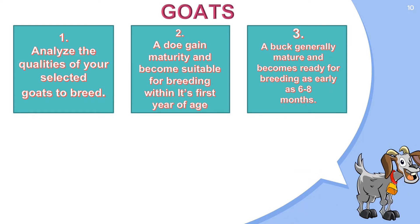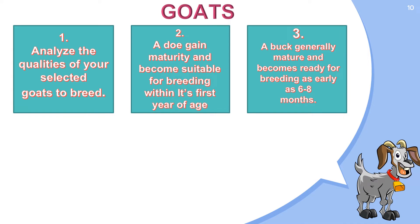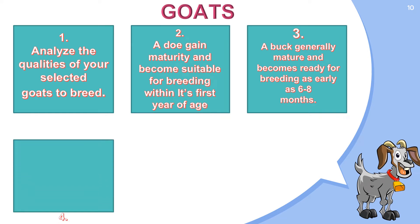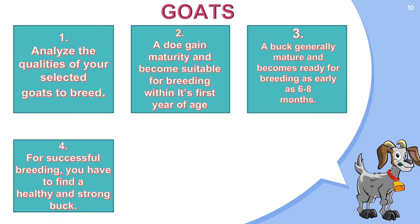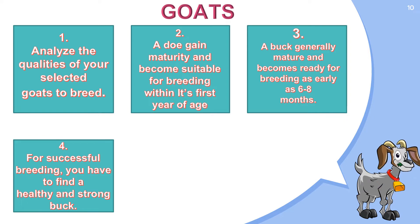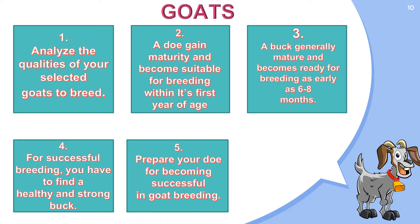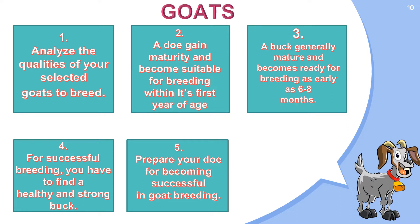a buck is a male goat. A buck generally matures and becomes ready for breeding as early as 6 to 8 months. For the next one, for successful breeding, you have to find a healthy and strong buck. You can search for the right buck in your area or any existing goat farm within your area. Next, prepare your doe for becoming successful in goat breeding. The health condition of the doe must be very good and you should never try to breed any weak or ill doe.